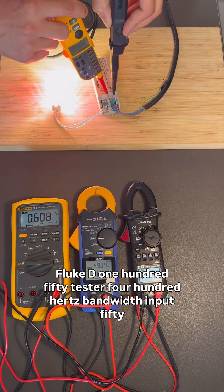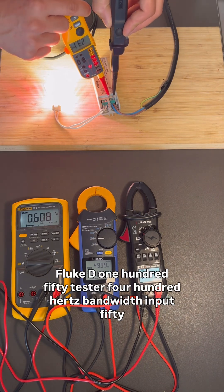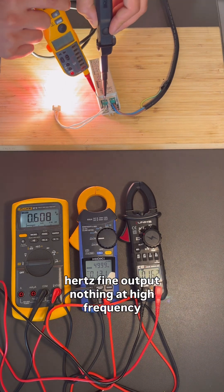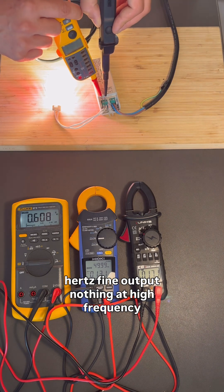Fluke D-150 tester, 400Hz bandwidth. Input, 50Hz. Fine. Output, nothing at high frequency.